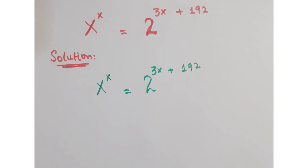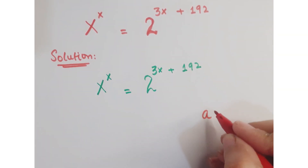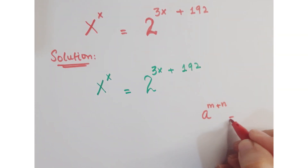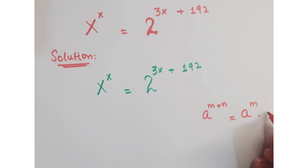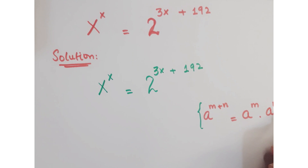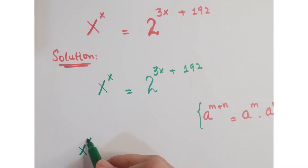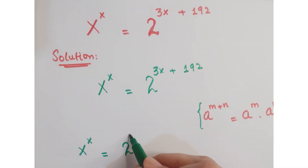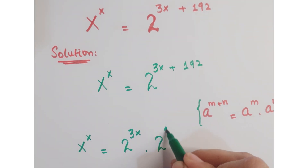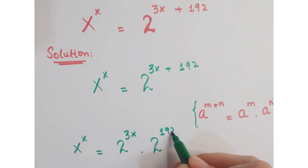As you know that a to the power m plus n can be written as a to the power m into a to the power n. So we can write this as x to the power x is equal to 2 to the power 3x into 2 to the power 192.